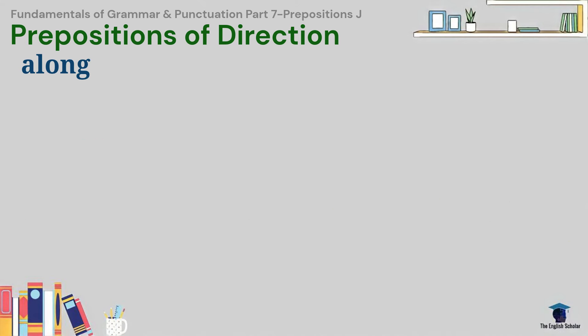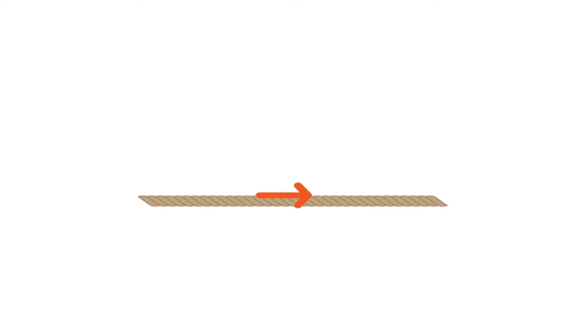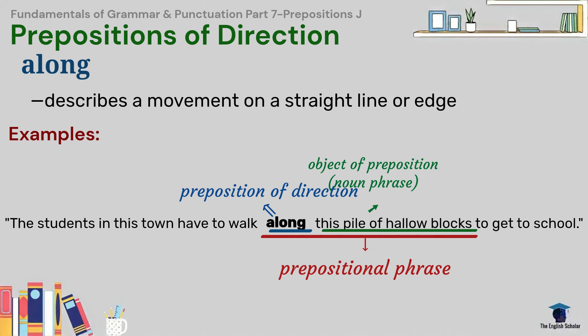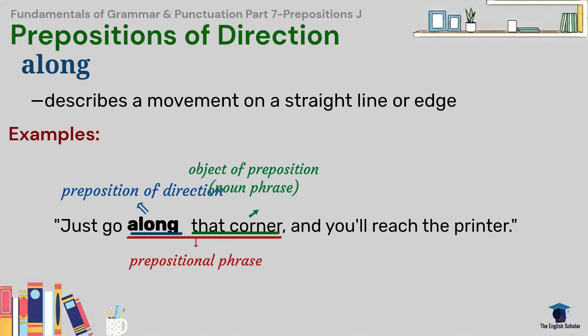Along describes a movement on a straight line or edge. For example, the students in this town have to walk along this pile of hollow blocks to get to school. Just go along that corner and you'll reach the printer.